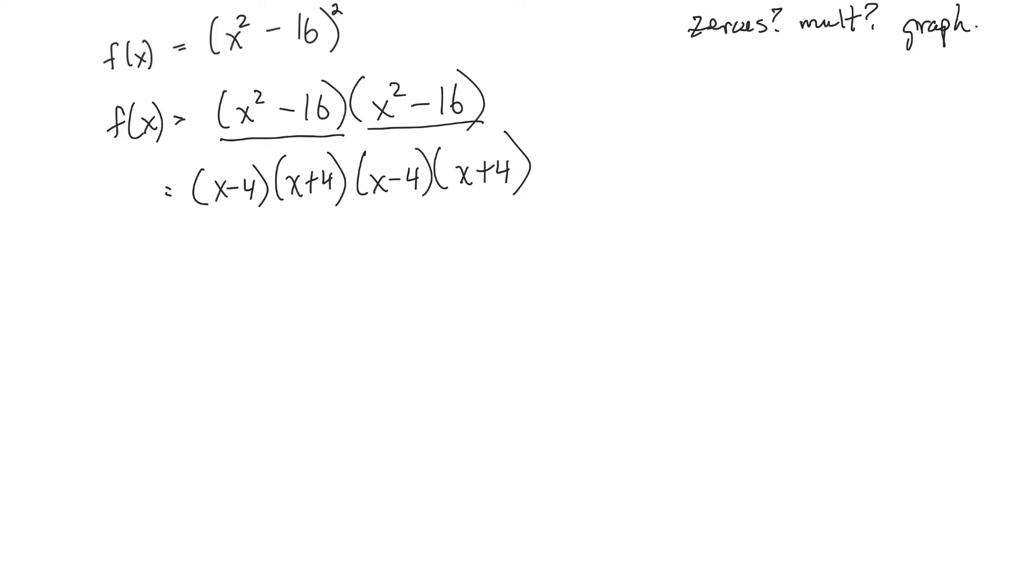Now to solve for the zeros, I plug a zero in for f of x. Okay, and now I solve this equation. Since it's this times this times this times this equals zero, I can use the zero property. So either x minus 4 is zero, or x plus 4 is zero, or x minus 4 is zero, or x plus 4 is zero. Add 4 to each side, subtract 4, add 4, subtract 4.